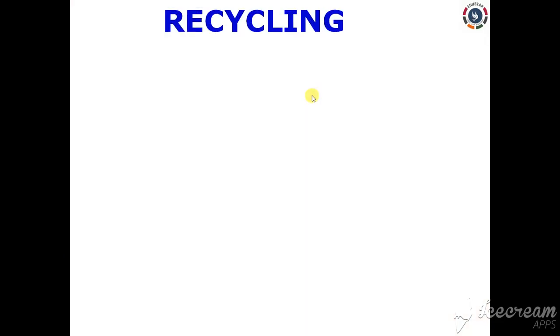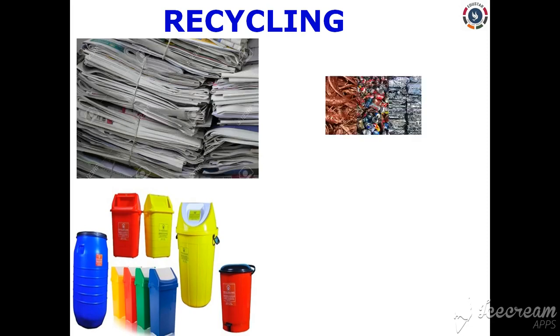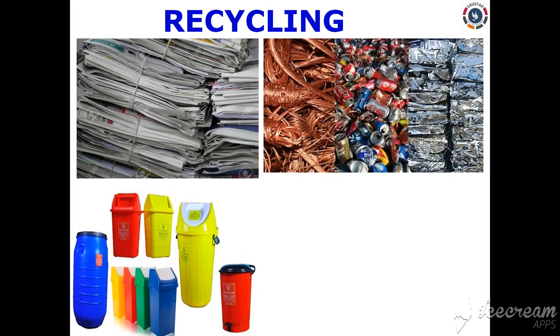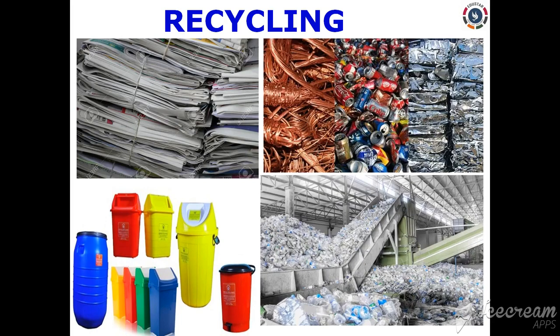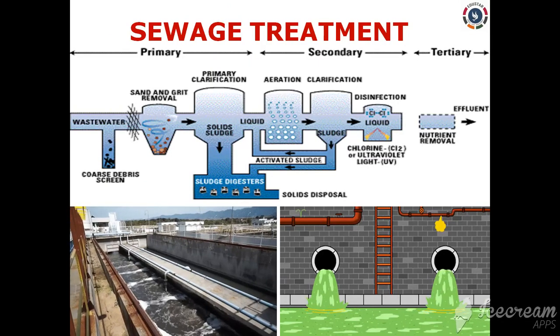The first method is recycling. Solid waste such as plastics, paper, and metals are recycled. Broken plastic articles like plastic bags, buckets, mugs, and cups are sent to plastic processing factories, and metal articles are sent to metal industries where they are melted and recycled for various purposes. Waste paper is also sent to paper mills to be reprocessed into new paper.